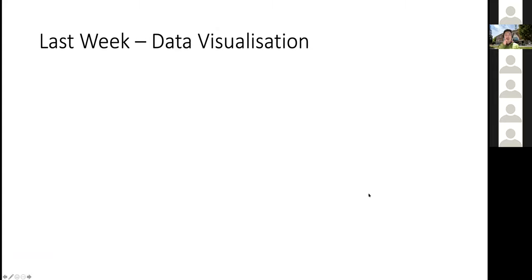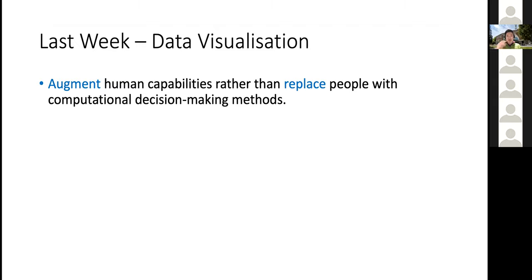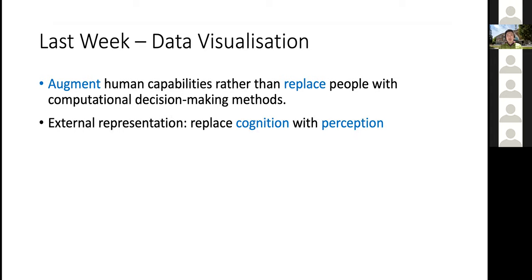Last week we first covered data visualization — what we mean by data visualization. There are a few important things: it's aimed to augment or improve human capabilities rather than replace people with purely computational decision-making methods. A second thing is to replace cognition with perception — instead of you having to remember everything in your mind, it shows you visually so you can focus on the reasoning part.